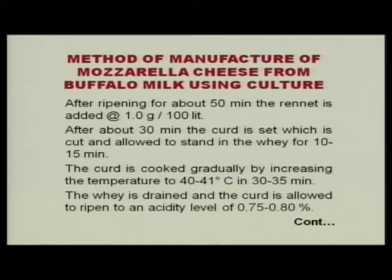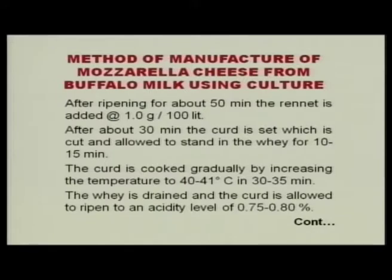Here the cooking temperature is higher than cheddar cheese — there the cooking temperature was 37 to 38 degree centigrade, whereas here we go for higher cooking temperature. You can see the starter culture uses thermophilus which can grow at slightly higher temperature. The whey is drained and curd is allowed to ripen till the acidity reaches 0.7 to 0.8%. As we increase the acidity from 0.5 onwards up to 0.8%, the product quality is better.